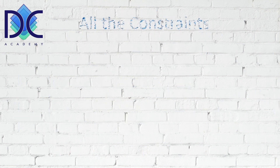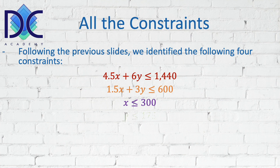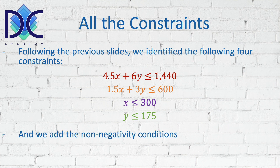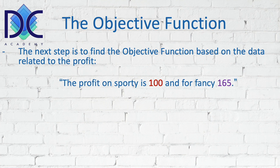These are all the constraints we can deduce from the description of the problem — four constraints in total. Remember that in a linear programming problem we also have to add the non-negativity conditions: x ≥ 0 and y ≥ 0. The next thing to do is complete the objective function: 100x + 165y must be maximum.